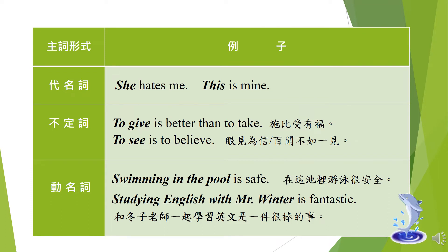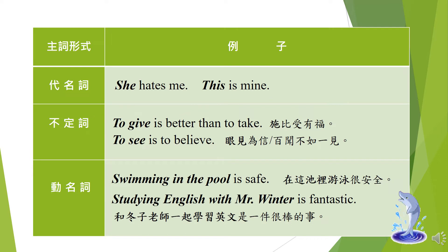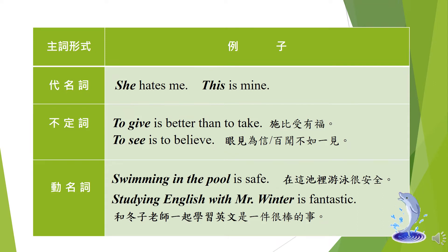To see is to believe，眼見為信，或者說百聞不如一見。字面上的意思：to see，看到他就是相信了。在這個句子裡面，to see 是這個句子的主詞，is 是動詞，to believe 則是主詞補語。